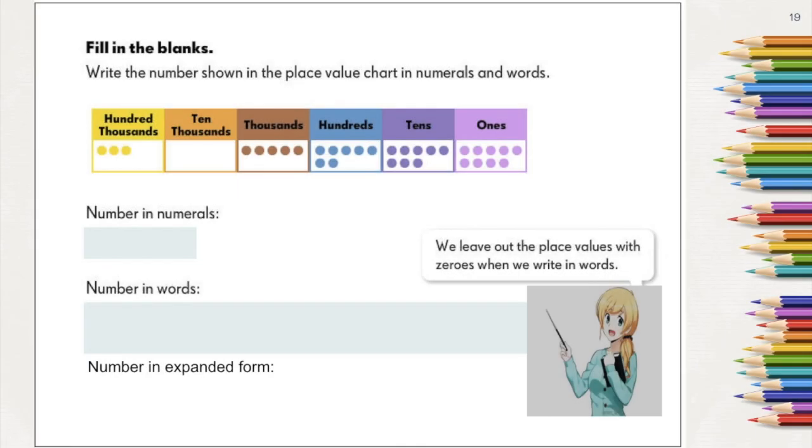One more example. The number here in this place value chart is represented in this numeral: 305,789. In expanded form, we have 300,000 plus 0 plus 5,000 plus 700 plus 80 plus 9. Again, you may delete this part because 0 here doesn't have any value.